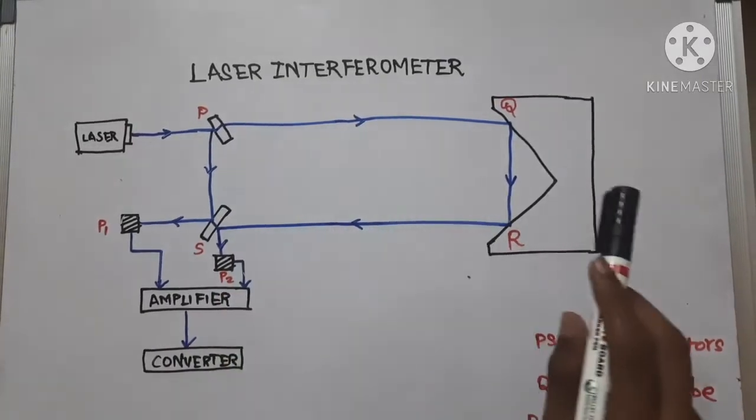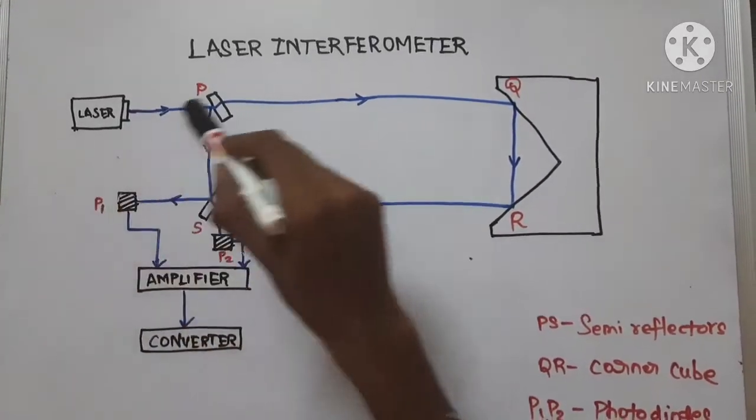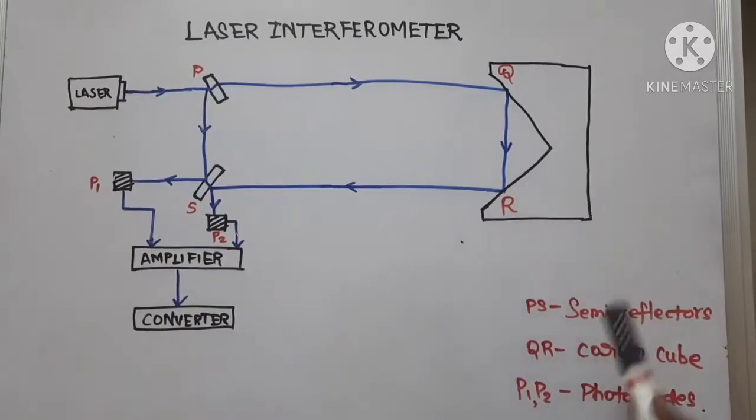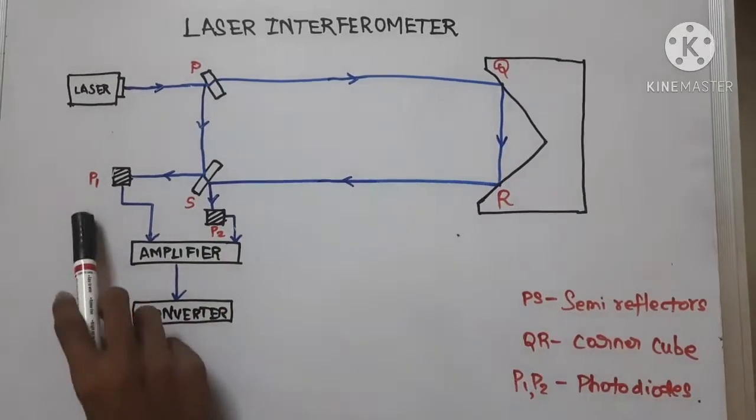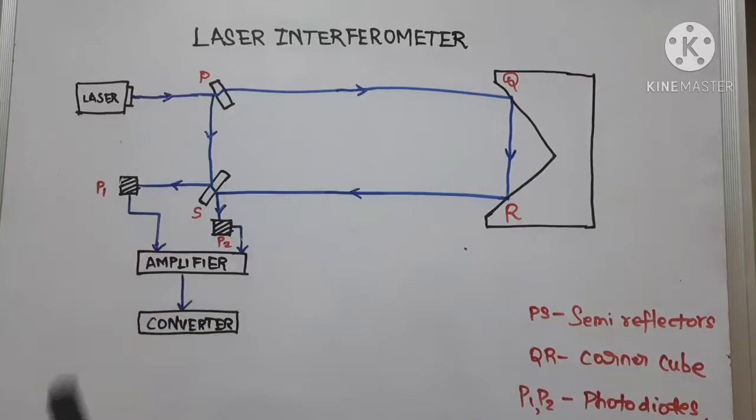Let's see the construction of the laser interferometer. The laser is placed here and P and S are the semi-reflectors, Q and R are the corner cubes, and P1 and P2 are the photodiodes. The laser used is helium neon laser.